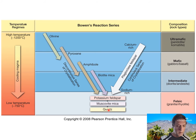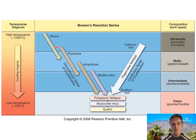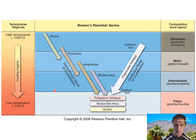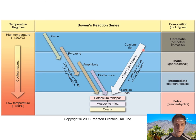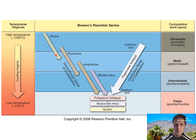This also works in reverse for melting: if you take an igneous rock containing quartz, mica, and feldspar and start melting it, the first mineral to melt is quartz, because it crystallized at the lowest temperature. The last mineral to melt is olivine, because it has the highest melting and crystallization point. The feldspar side of the chart is a continuous series — as temperature drops, feldspar crystallizes from calcium-rich to sodium-rich compositions.